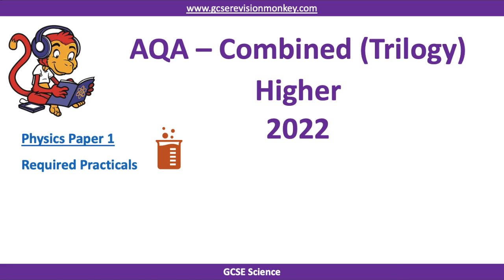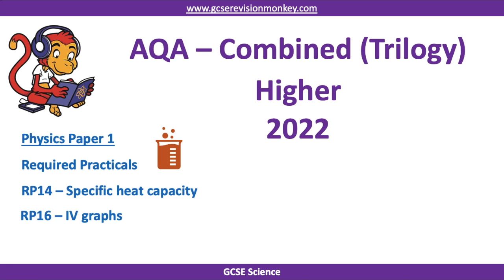Hello and welcome to this Revision Monkey video on the required practicals that you've been asked to focus on for the 2022 exams for AQA Combined Science — the trilogy version — which means at the end of your course you do six exams, all one hour and 15 minutes long. This is for higher tier students, and we're looking at the required practicals in physics paper one: specific heat capacity and current-potential difference graphs, otherwise known as IV graphs.